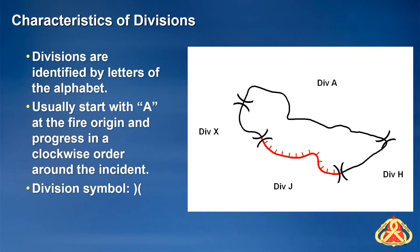Now we will cover some of the characteristics of breaks and how to place them on a map. Divisions are identified by letters, usually starting with A and progressing in a clockwise manner around the incident. Breaks are usually placed on a geographic feature, such as a ridge, stream, or road, so that the boundary between divisions is easily distinguished by line personnel. However, breaks may be placed anywhere that operations feels they are appropriate.